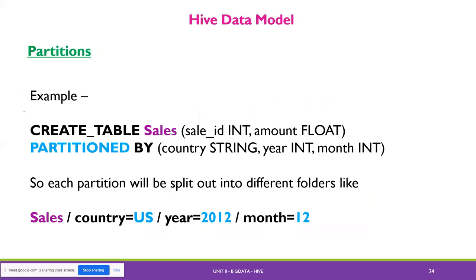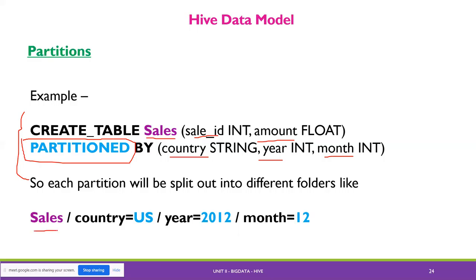Here is an example: CREATE TABLE sales with columns sale_id and amount, PARTITIONED BY country, year, and month. After partitioning using that keyword, the sales table is split into different folders, for example: country=US, year=2012, month=12. So this particular table has been partitioned into different folders.